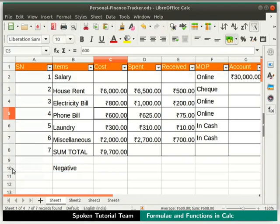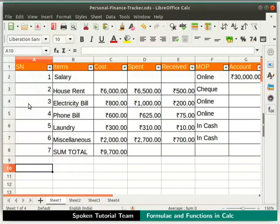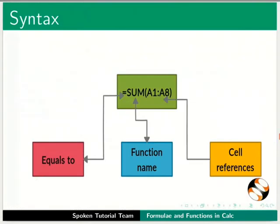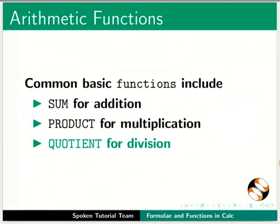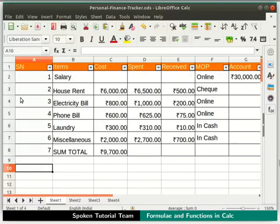Now let's delete the changes made. Next, let's learn a few basic and statistical functions. The syntax to write a formula with a function is: =FUNCTION_NAME(arguments, cell references). Common basic functions include SUM for addition, PRODUCT for multiplication, and QUOTIENT for division. Let me demonstrate how the SUM, PRODUCT, and QUOTIENT functions work.